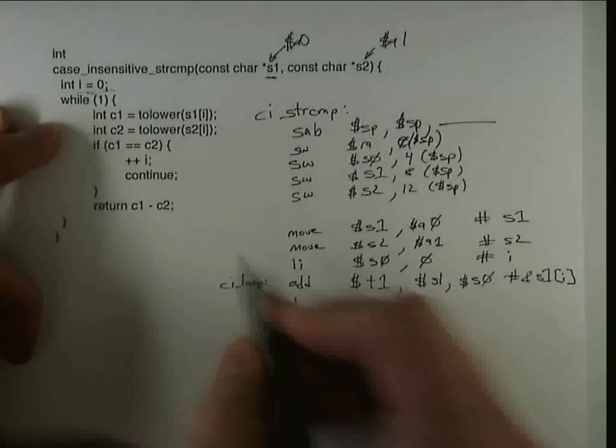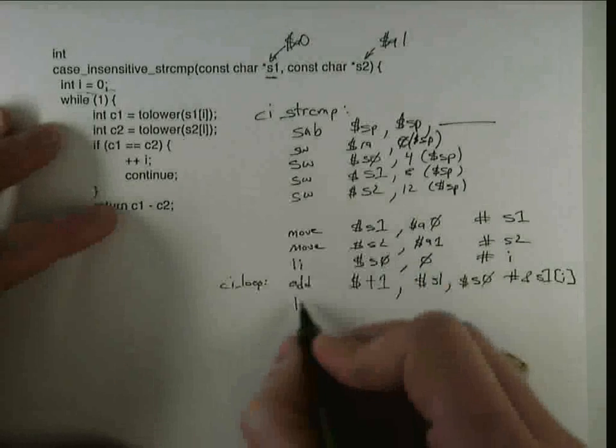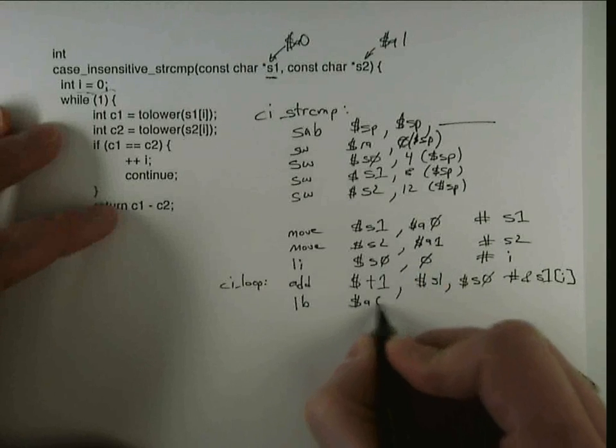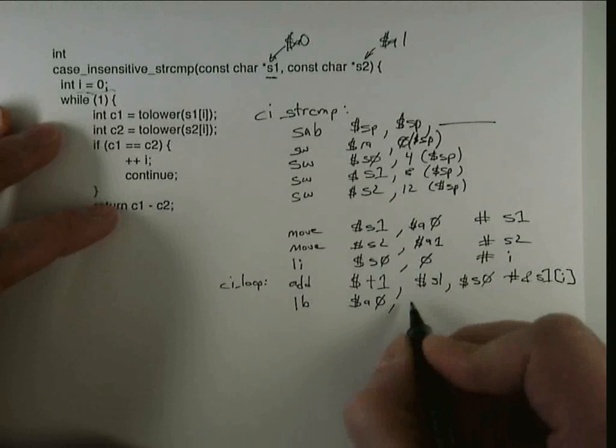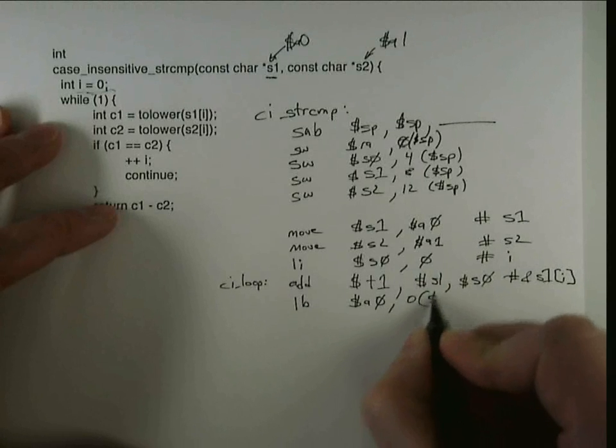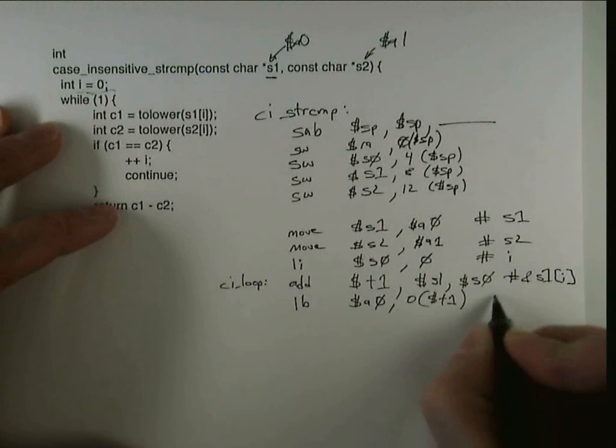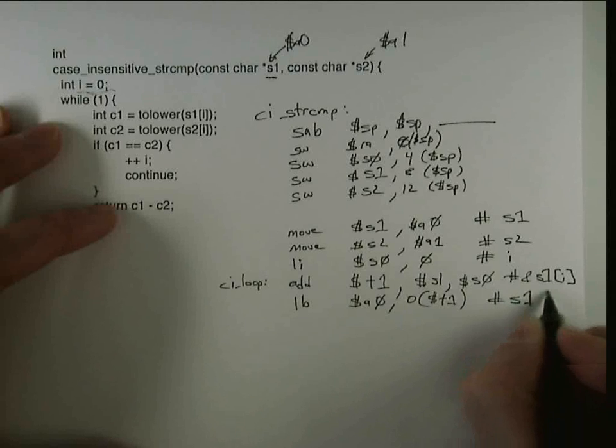And to actually get s1i, we need to do the load byte. I'm going to do that into a0 again because I'm going to call the function. It's an argument to the function that gets us s1i.